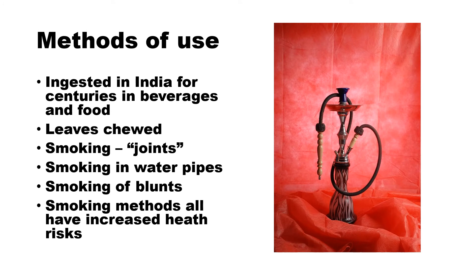Methods of use, or routes of administration, have varied widely, and each has its pros and cons. It's been ingested in India for centuries in beverages and food — common there to make tea from the marijuana leaves; the leaves can also be chewed. In our culture, smoking was often done via joints, which are hand-rolled marijuana cigarettes. It can also be smoked in water pipes. Many people think water pipes are less dangerous, and there is some truth that the cooling of water makes it less likely to burn the lungs and less likely to accumulate tar — a carcinogen. But water can quickly grow fungus and fungal infections are possible, and most people don't know how to properly sterilize water pipes.